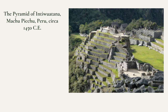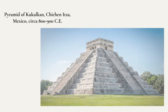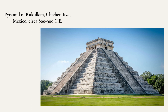There are actually more pyramids built by the Mesoamerican peoples than in any other part of the world. Some of these impressive structures include Machu Picchu, the famous pyramid of Peru, built by the Inca around 1450 CE; the Pyramids of the Sun and the Moon, built by the Teotihuacan people between 200 and 250 CE and named by the Aztecs; and the Pyramid of Kukulcan, also known as El Castillo, built by the Maya between 800 and 900 CE in Chichen Itza, Mexico.